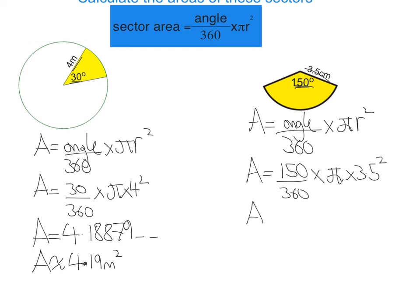Put that into my calculator, and you should get 16.0352... And then rounding that to three significant figures would be 16.0 centimetres squared.